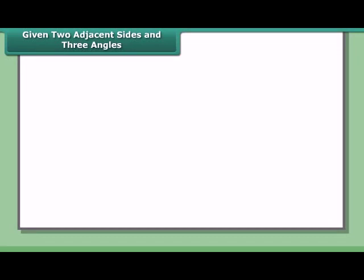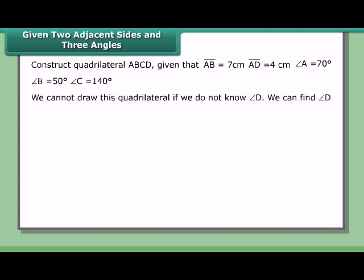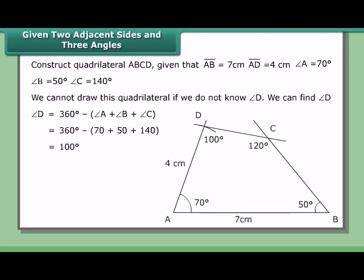Given two adjacent sides and three angles, construct quadrilateral ABCD where AB = 7 cm, AD = 4 cm, angle A = 70°, angle B = 50°, and angle C = 140°. We cannot draw this quadrilateral without knowing angle D, but we can find it: angle D = 360° − (70° + 50° + 140°) = 100°.